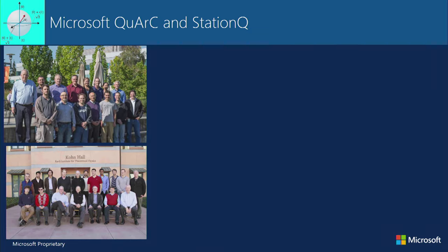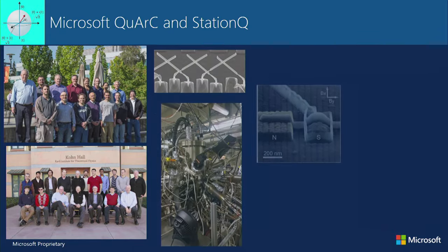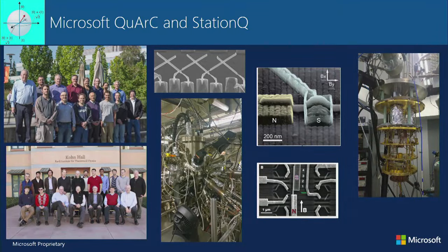Let me introduce the team. The upper picture is the group in Redmond; the bottom picture is the group in Santa Barbara. We also have labs working with us all over the world building materials, devices, and control structures — all the things necessary to actually build a quantum computer. One thing Microsoft excels at is building systems, so we're not just trying to build qubits; we're trying to build the entire machine end-to-end.